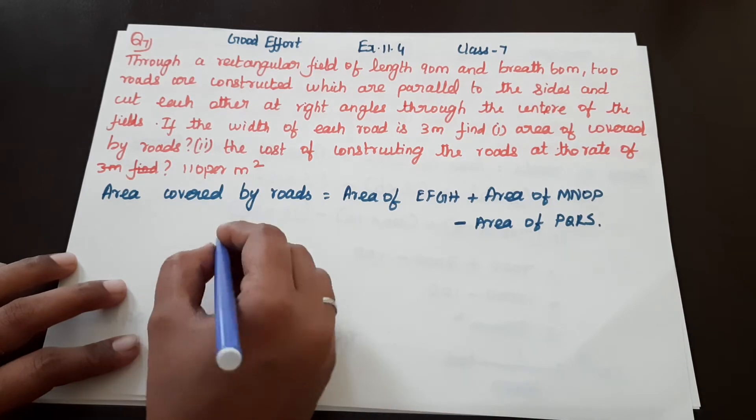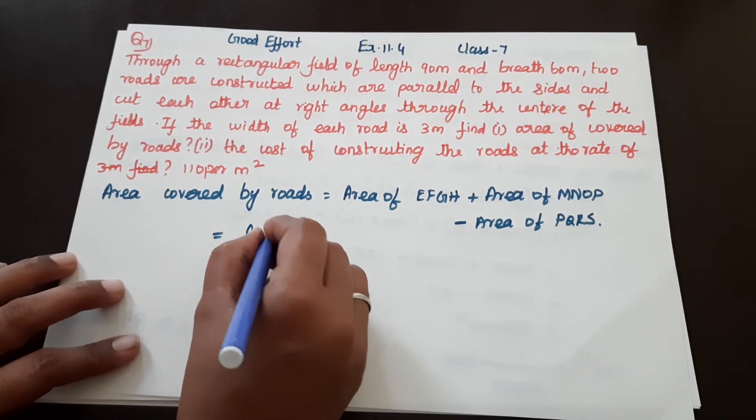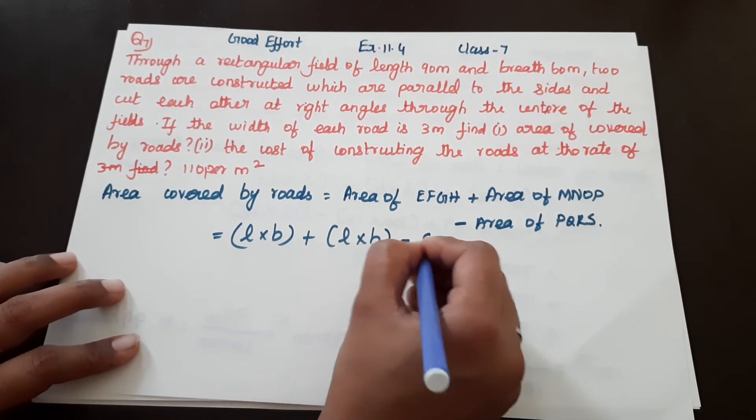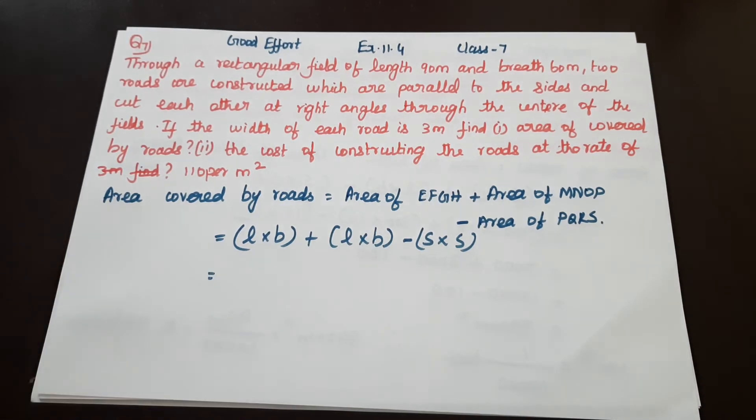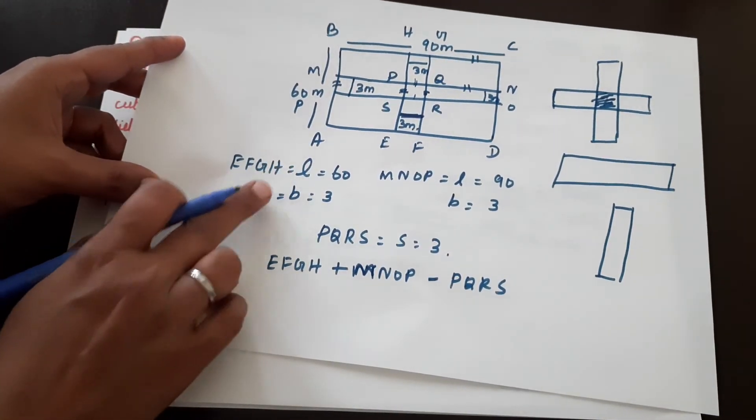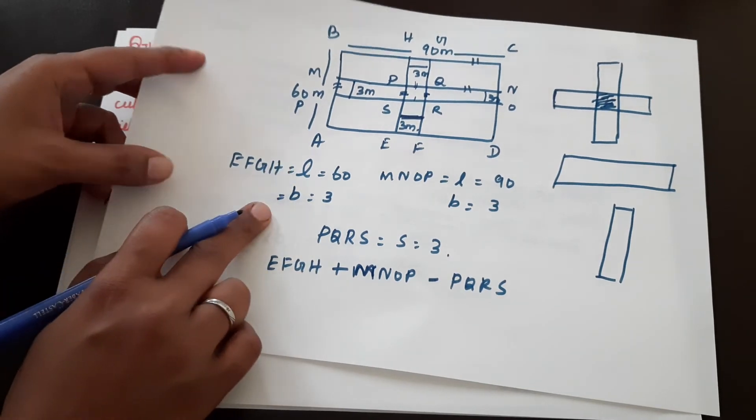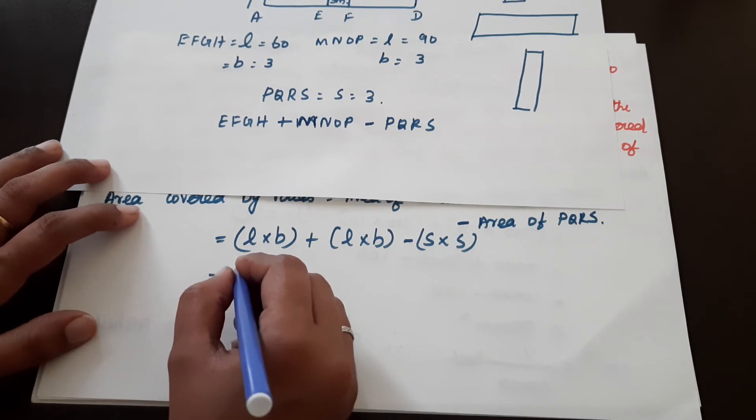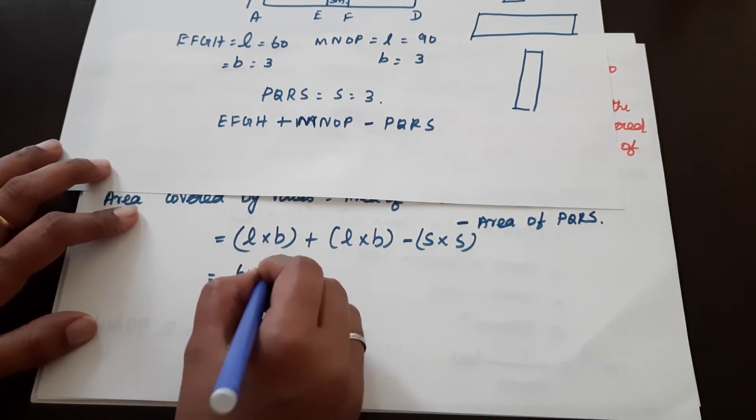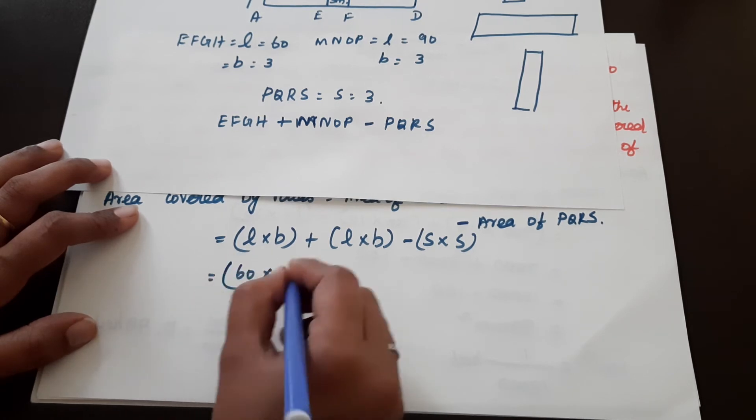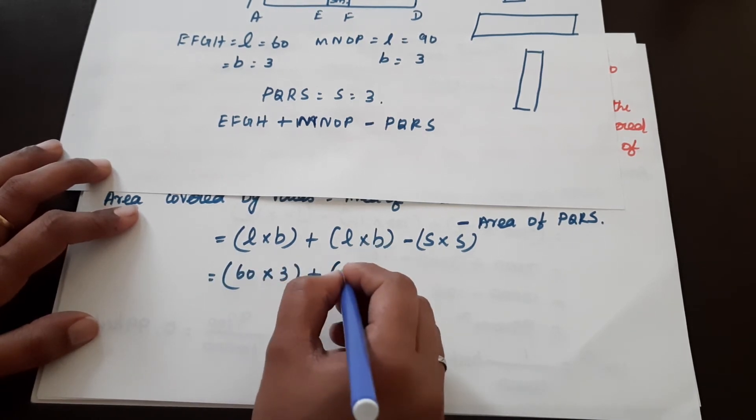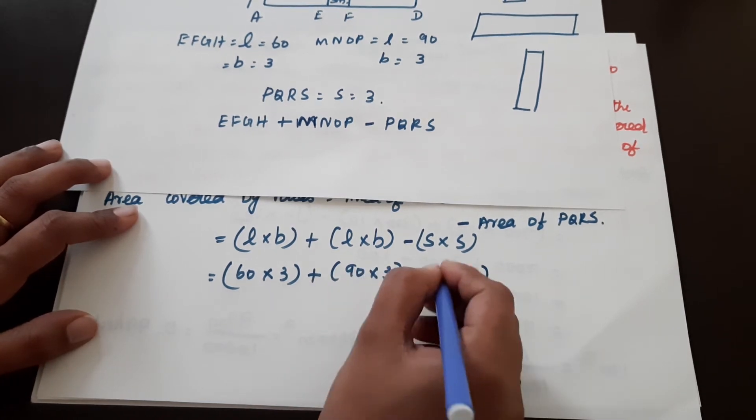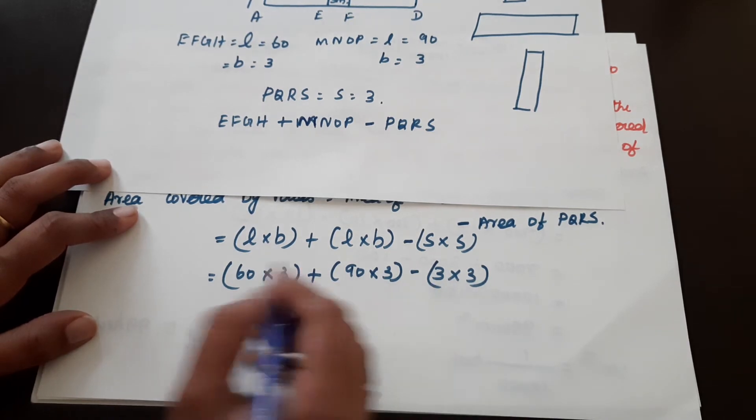So in the area of EFGH, the rectangle, we have to write down the length and breadth. So, length is 60, breadth is 3. So, area of EFGH length is 60, breadth is 3. Plus MNOP length is 90, breadth is 3 minus 3 into 3. Square of side is 3 into 3.